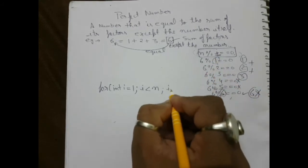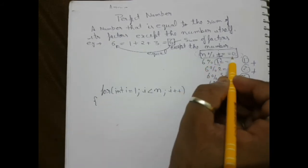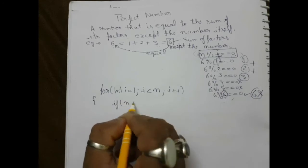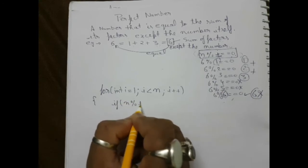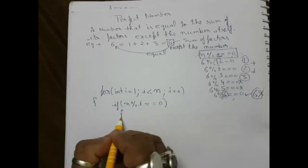This statement with the condition: if n mod i equals zero, if it is a factor, that means I need a variable to store that.